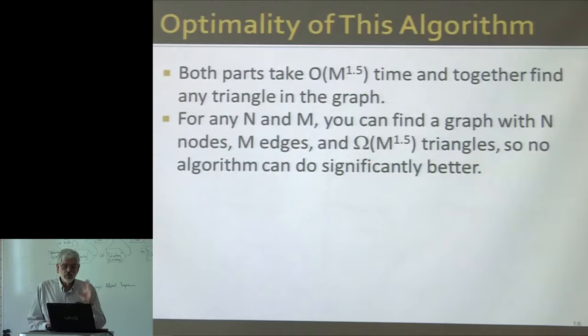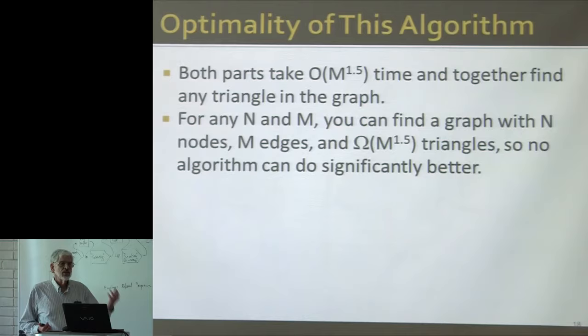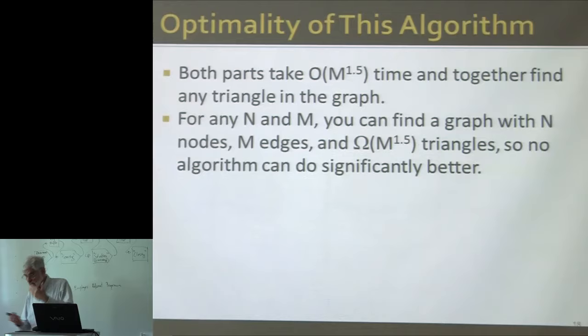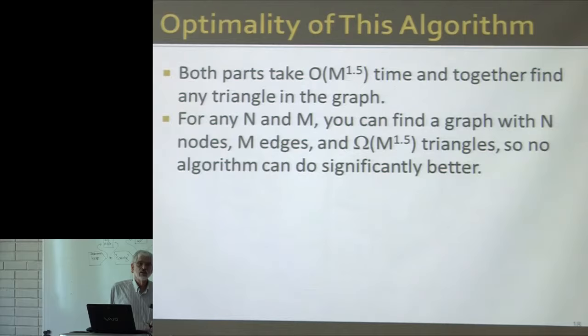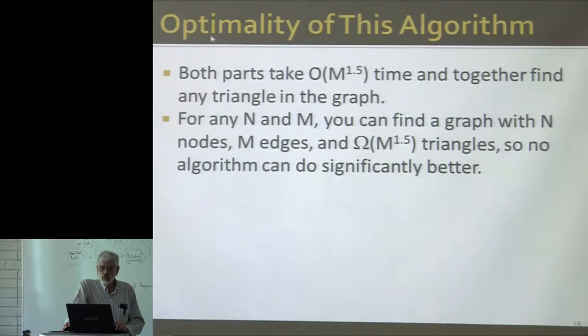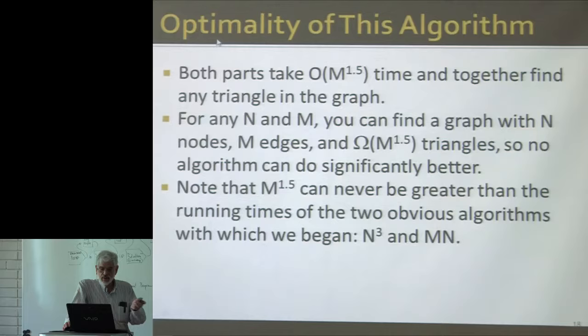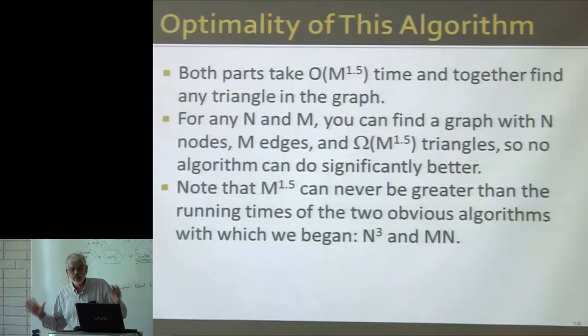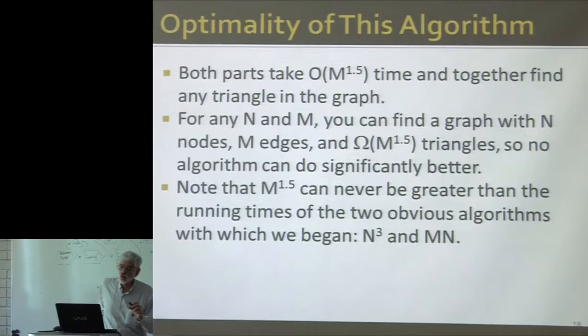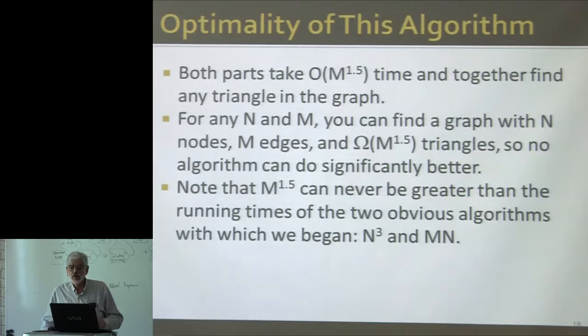I'm not just going to claim that it's optimal. It turns out that for more or less any n and m, you can always find a graph that has n nodes and m edges and actually has as many as m^1.5 triangles. You presumably can't count the triangles without actually finding each one, so you can't do any better than m^1.5. And since m can't be bigger than n squared and is usually a lot less than n squared, m^1.5 is significantly less than both n cubed and m×n.